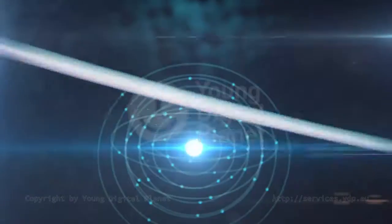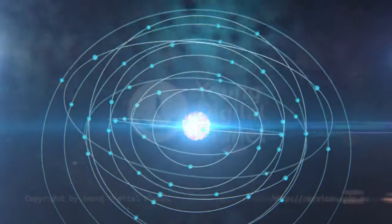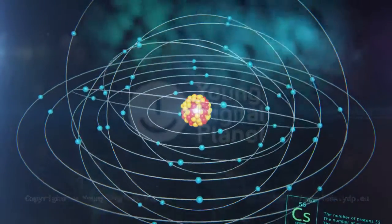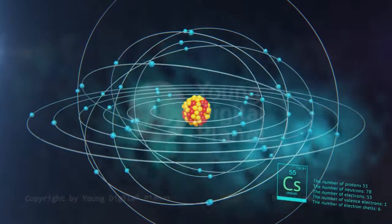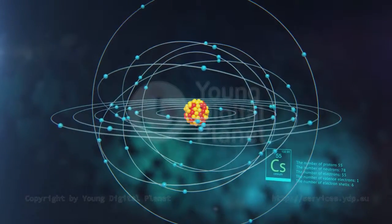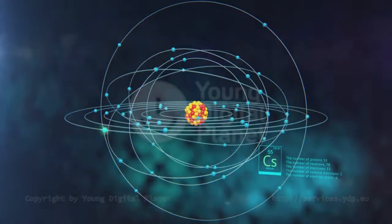The cesium nucleus contains fifty-five protons and seventy-eight neutrons, while fifty-five electrons are located on six electron shells. Cesium has one valence electron.